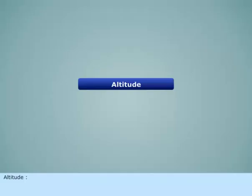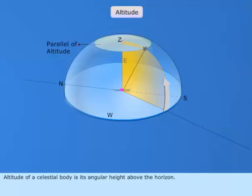Altitude of a celestial body is its angular height above the horizon.